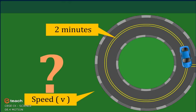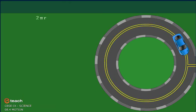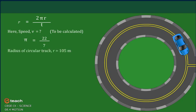Solution: We know that for a body moving in a circular path, v = 2πr / t. Here, speed v is to be calculated, π = 22/7, radius of the circular track r = 105 meters, and time taken for one round t = 2 minutes = 2 × 60 seconds = 120 seconds.